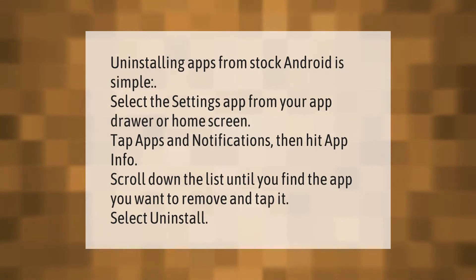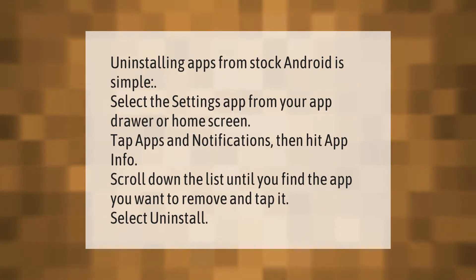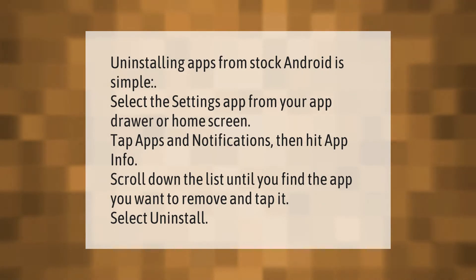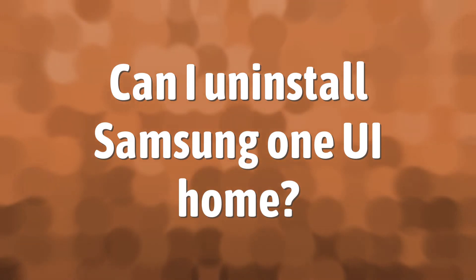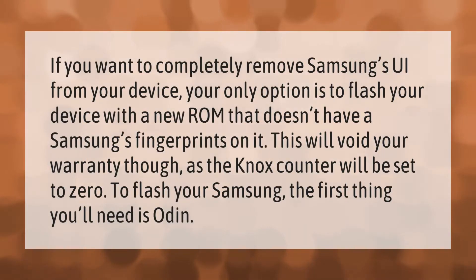Uninstalling apps from stock Android is simple. Select the Settings app from your app drawer or home screen, tap Apps and Notifications, then hit App Info. Scroll down the list until you find the app you want to remove and tap it. Select Uninstall.